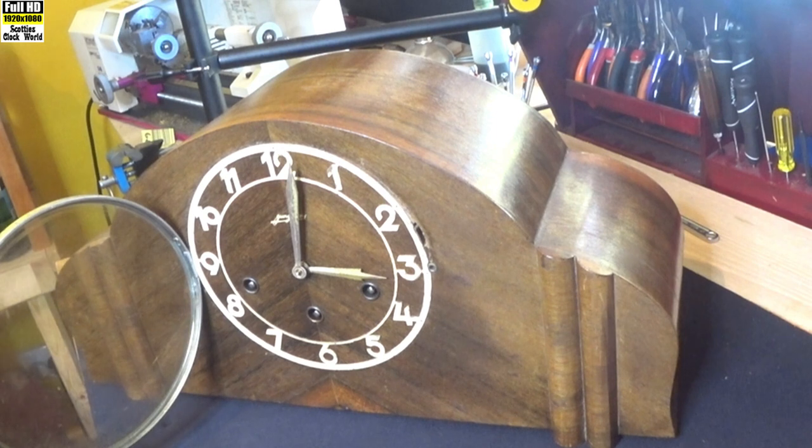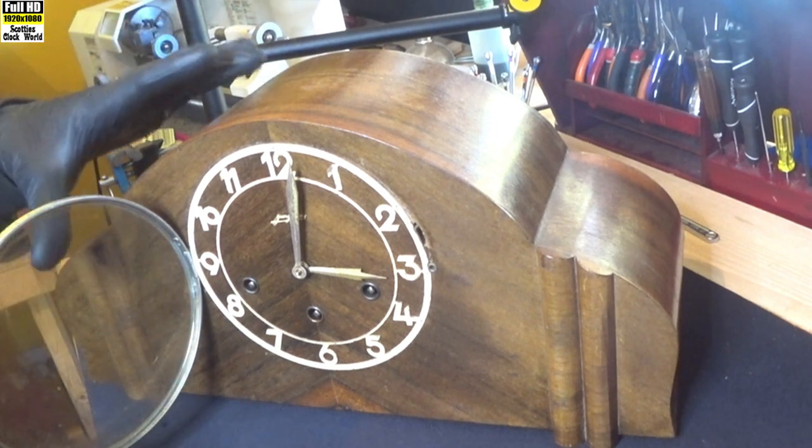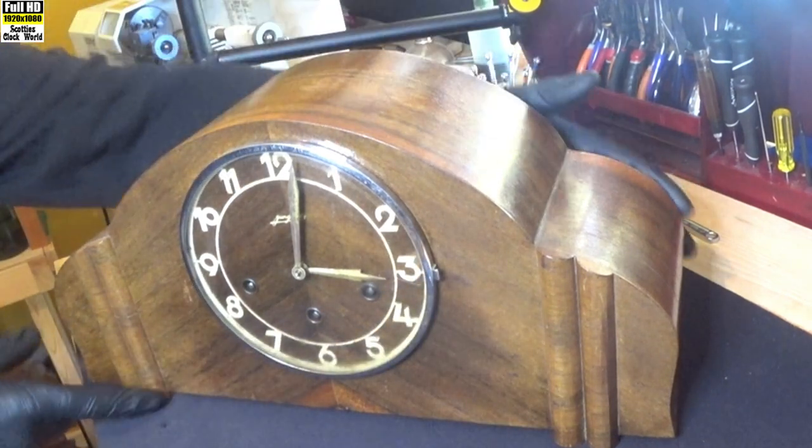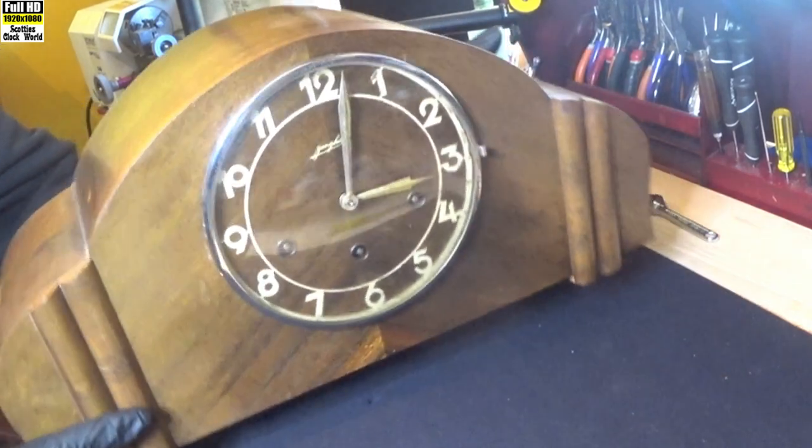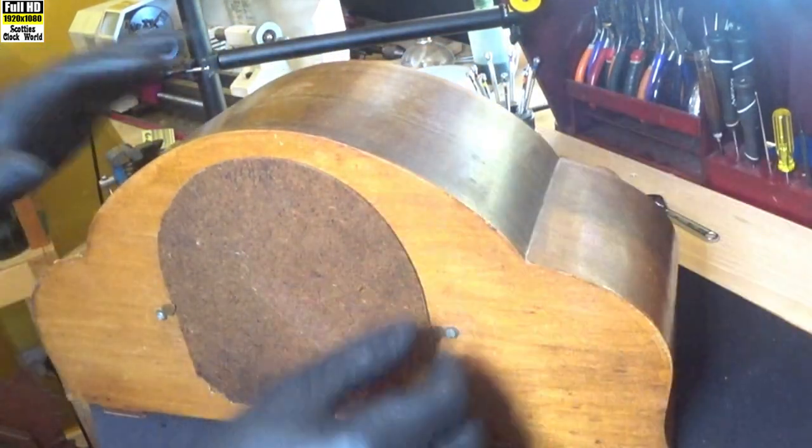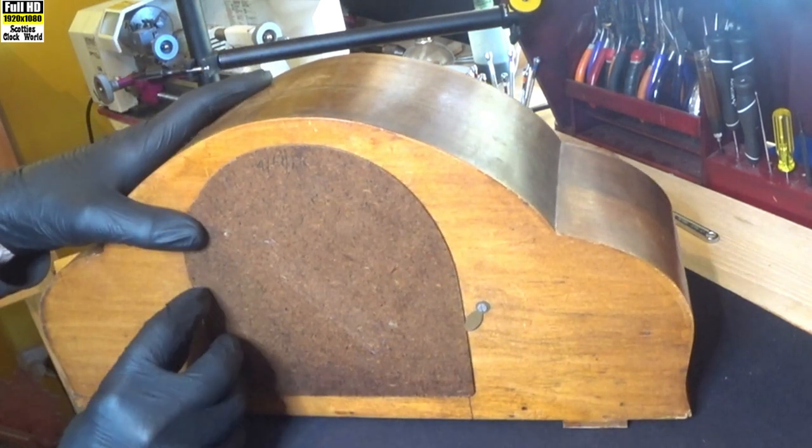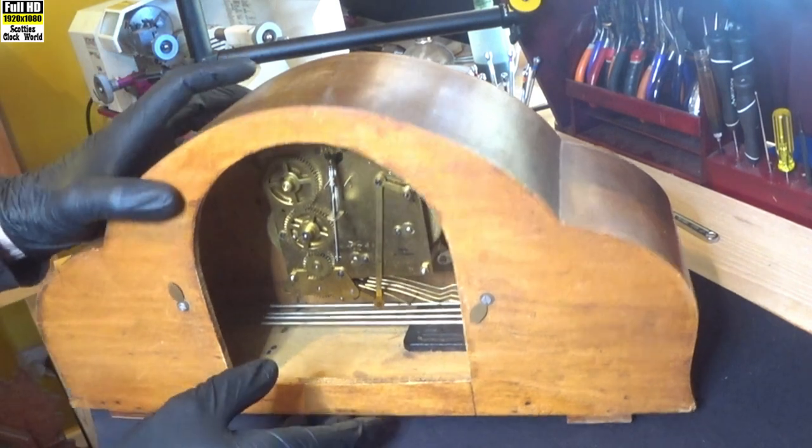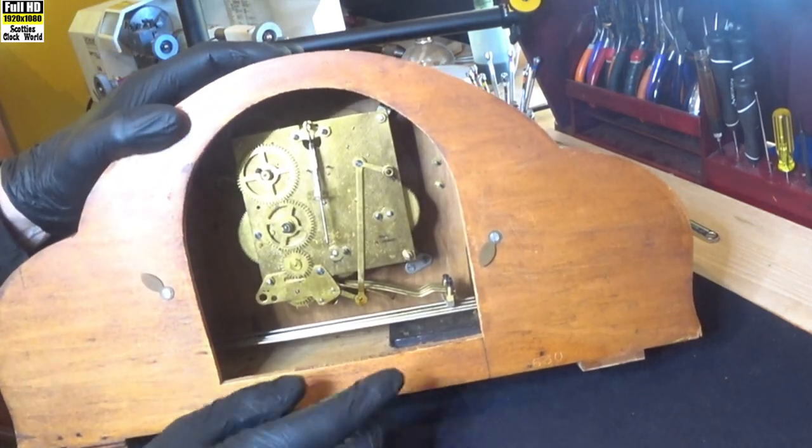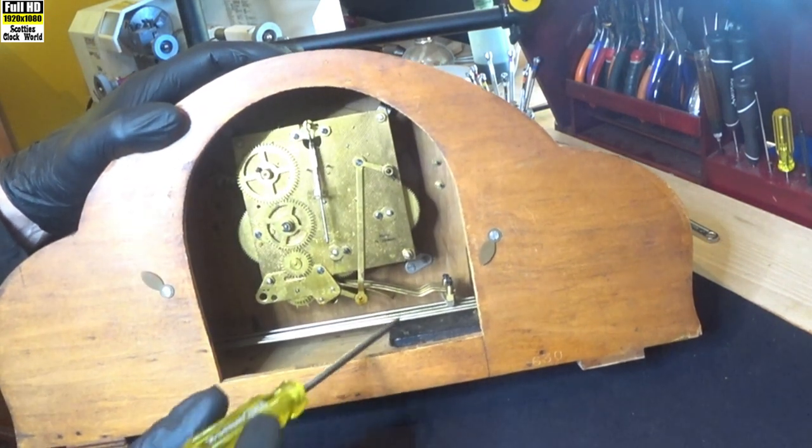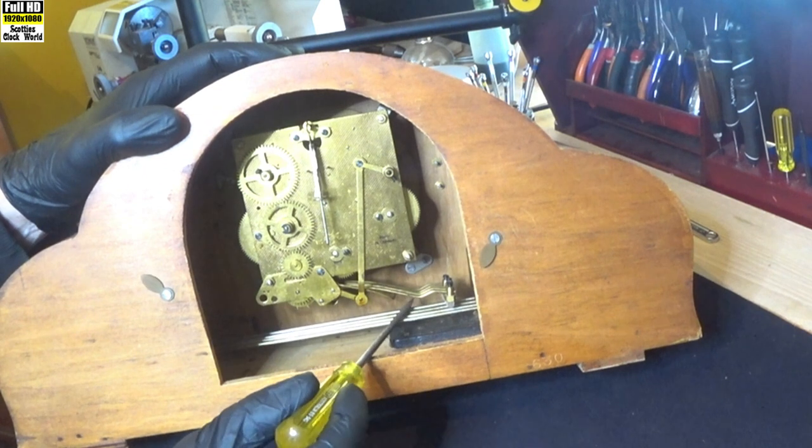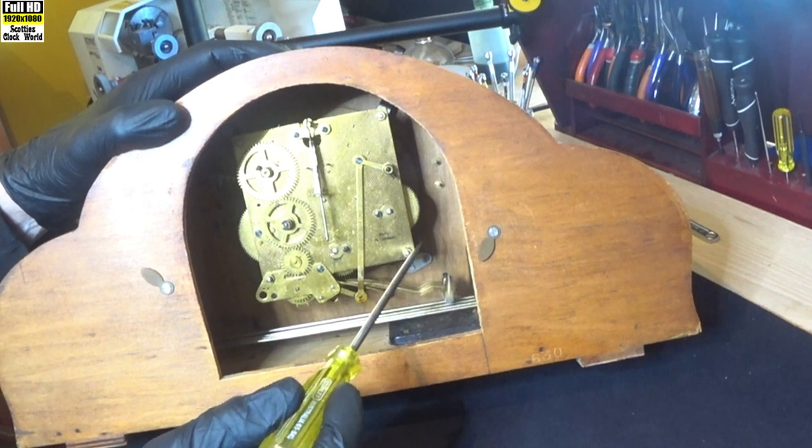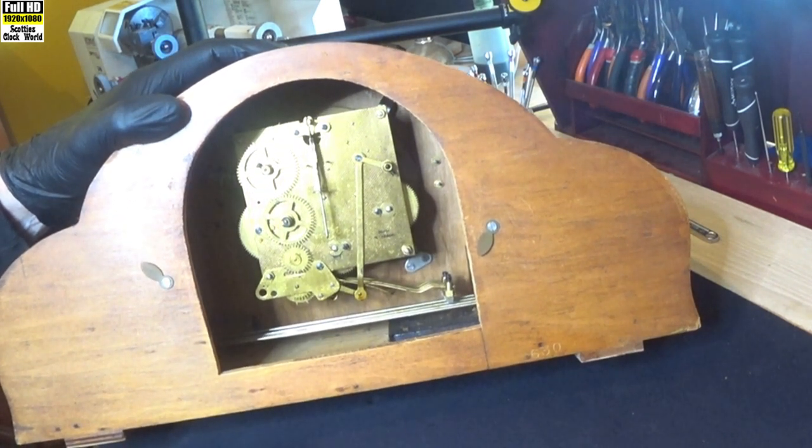Alright, that's the sound it makes, beautiful tone on the melody. Right, we'll turn it round and have a look in the back of it. Take the back door off. Falls out, and there's the movement in the case, four gong rods. It plays Westminster chimes, beautiful resonance on it.